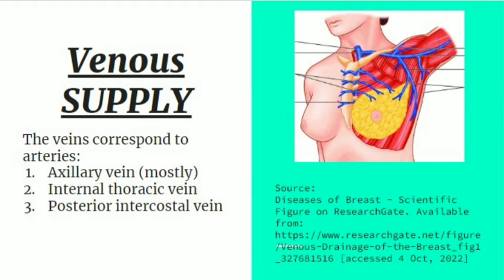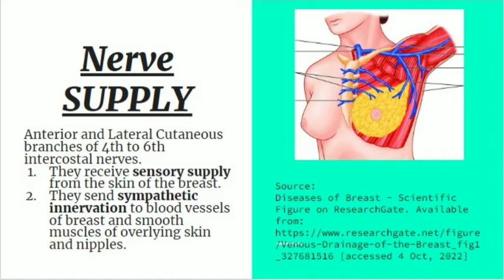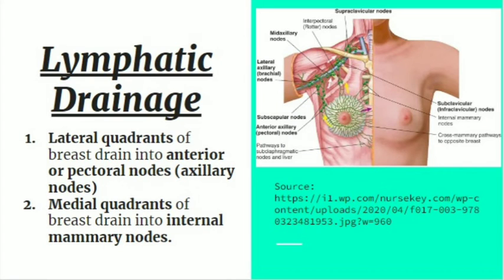The breast receives its innervation from the anterior and lateral cutaneous branches of the fourth, fifth, and sixth intercostal nerves. These nerves provide sensory supply from the skin of the breast and deliver sympathetic innervation to the blood vessels and smooth muscles of the overlying skin and nipples.